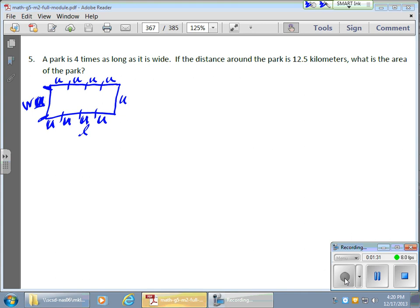Why am I drawing all of those units in? Well, what I want to do is deal with the perimeter. They told me the perimeter P is 12.5 kilometers. Why are all these U's important? The fact is, no matter what that unit is, I need 10 of them to actually get around that perimeter. There's 1, 2, 3, 4, 5, 6, 7, 8, 9, 10 particular units. So the perimeter not only is 12.5 kilometers, but it's also 10 units.